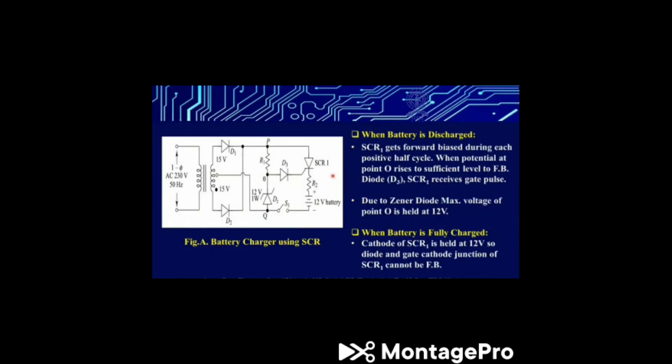Let's see how it works when the battery is being charged. SCR1 gets forward bias during each positive half cycle. When potential at point O rises to a sufficient level to forward bias diode D3, SCR1 receives a gate pulse. Due to the Zener diode, maximum voltage at point O is held at 12V. When the battery is fully charged, the cathode of SCR1 is held at 12V, so the diode and gate-cathode junction of SCR1 cannot be forward biased.